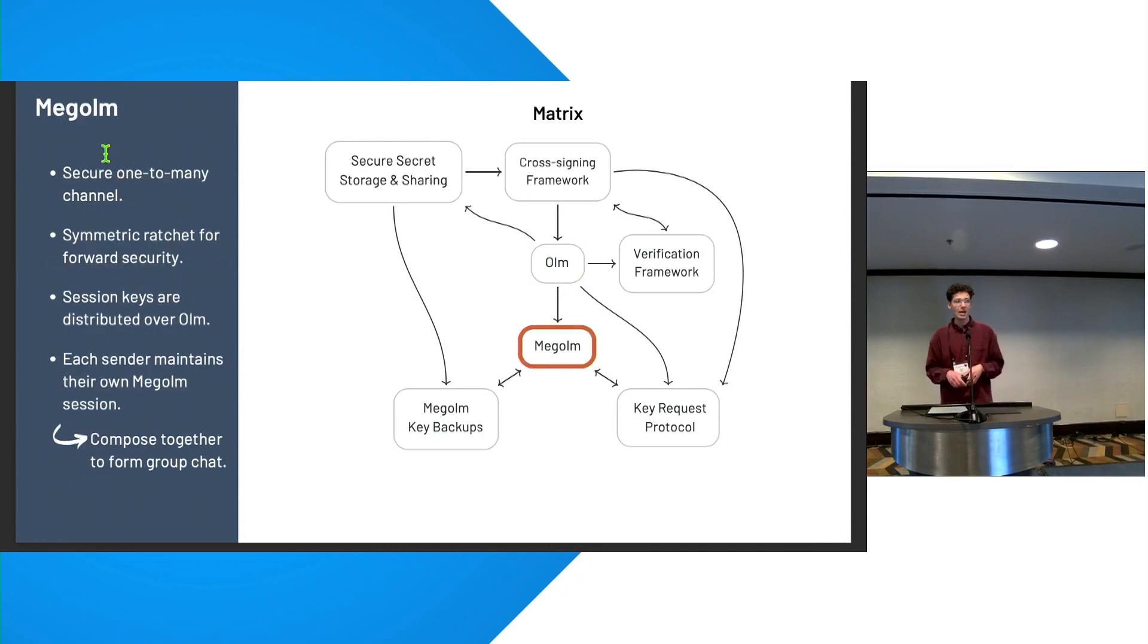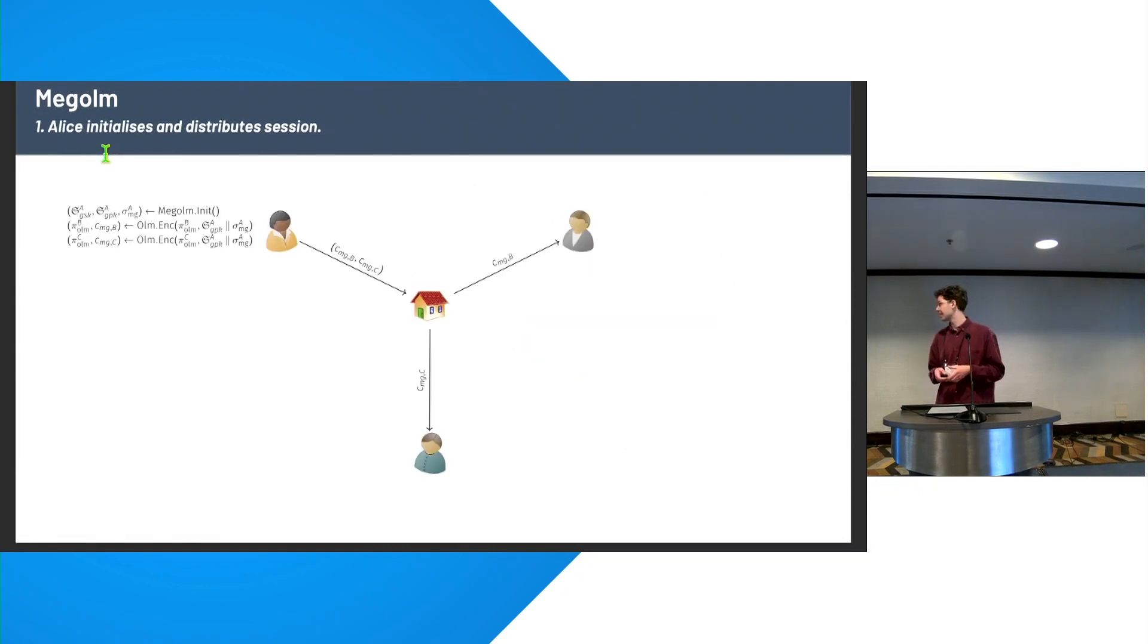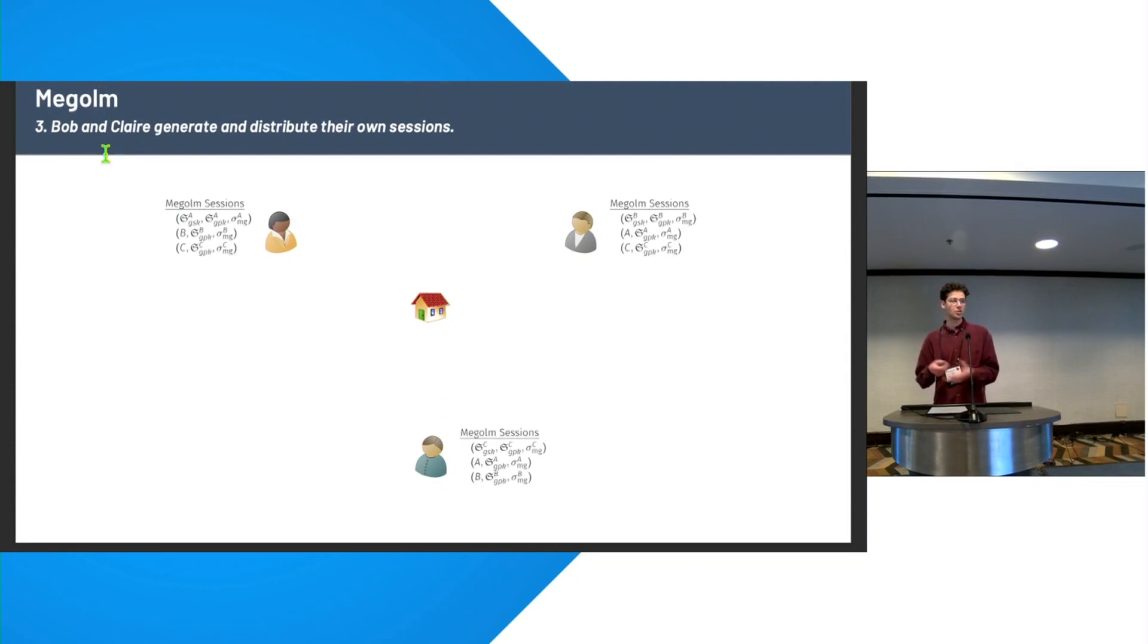So next up is MegaOhm. And MegaOhm is what is used for actual encryption of user messages. And the way it works is there are a bunch of secure one-to-many channels that are composed together to create a group chat. So here we've got Alice, Bob, and Claire. Alice is going to set up her own MegaOhm session, which has an inbound part, an outbound part, and a signature over the inbound part using the outbound part. She's going to distribute these keys using individual pairwise channels overall. And then Bob and Claire can decrypt them. And they can associate the inbound session that they get that can be used for decryption with the owner of the Ohm channel that it was sent with. So in this case, it would be Alice. And if Bob and Claire do the same thing, then we get this nice situation where everyone has a session used for sending, as well as the other members' inbound sessions that they can decrypt messages with. And now we get a group chat.